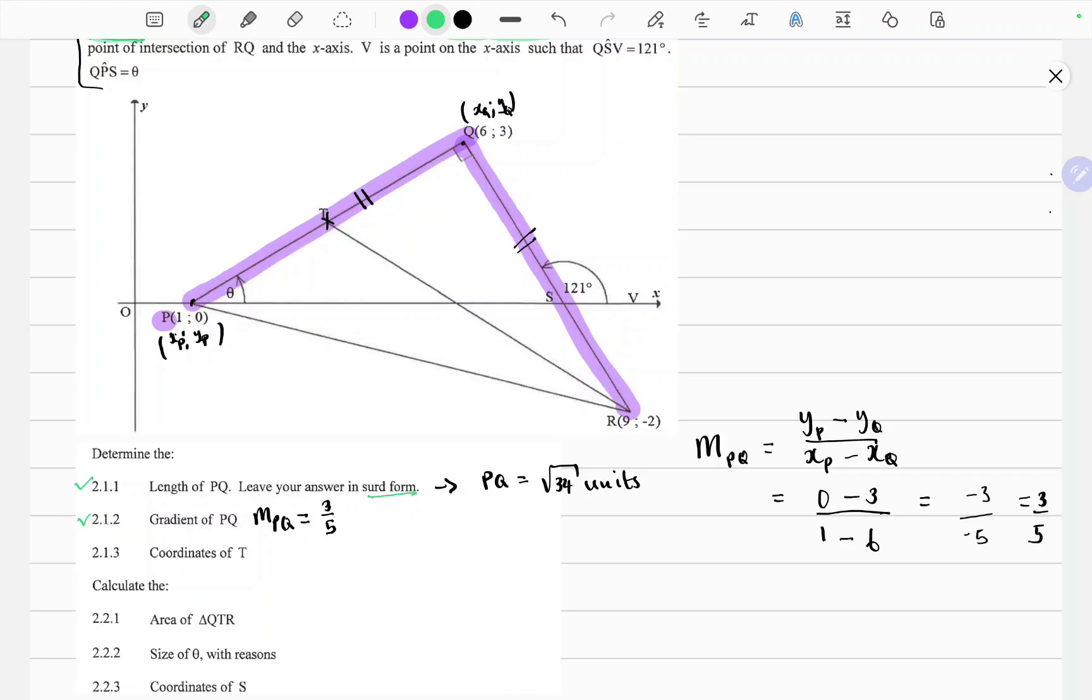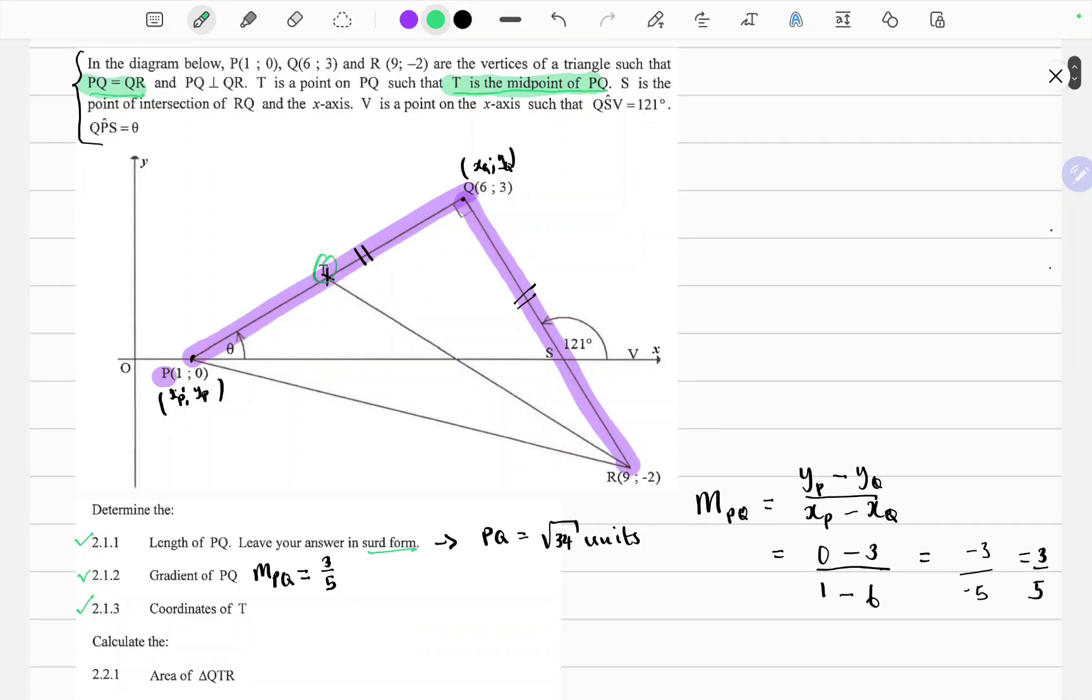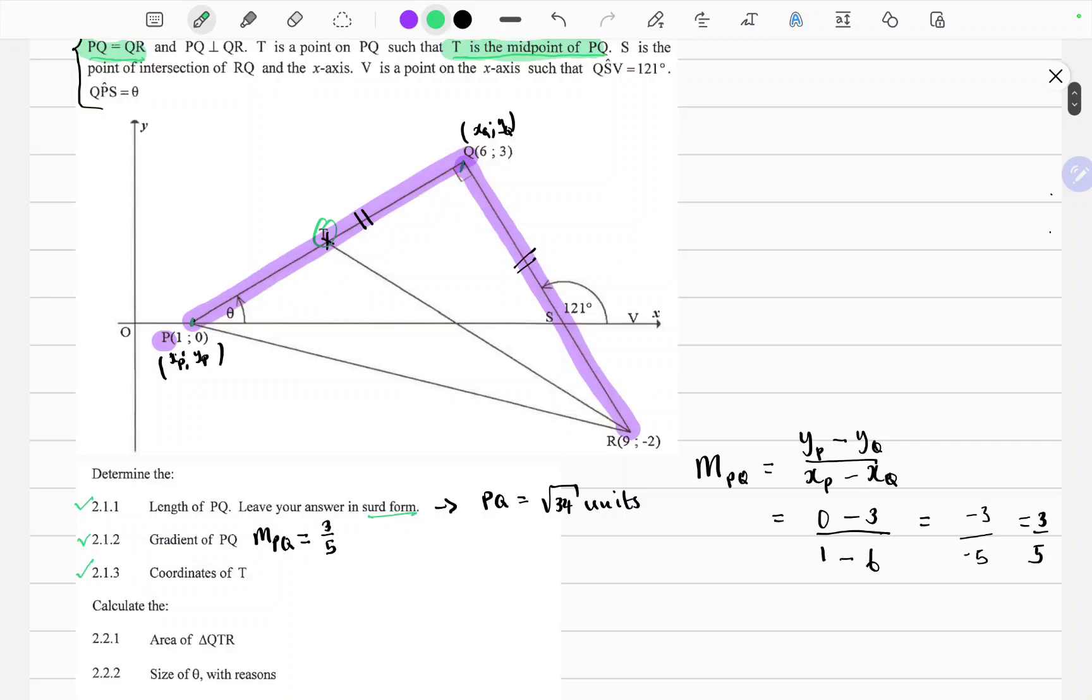So the third question wants us to find the coordinates of T and as we've mentioned before T is the midpoint of this line segment PQ. So we can apply the midpoint formula. So the midpoint formula is as follows. XP plus XQ over 2 and YP plus YQ over 2.